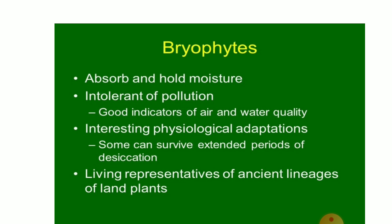Bryophytes act as early colonists, often following algae and simple lichens. After algae and simple lichens, Bryophytes colonize the area, giving place to vascular plants later on. Mosses are the pioneers — they form a protective covering over the crumbling soil of cliffs and prevent the rushing rainwater from cutting deeply into the soil, thereby preventing erosion.